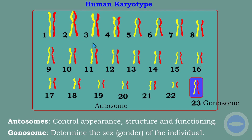The structure you see on your screen is a human karyotype. A human karyotype shows us the number of chromosomes in each human cell. Humans have 23 pairs of chromosomes. Of these 23 pairs, 22 are called autosomes, while the 23rd pair is called gonosomes, which are the sex chromosomes.